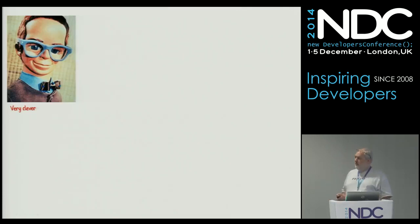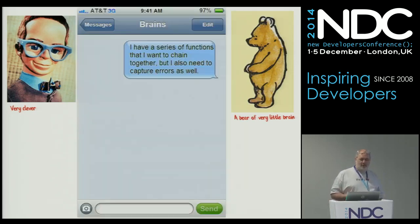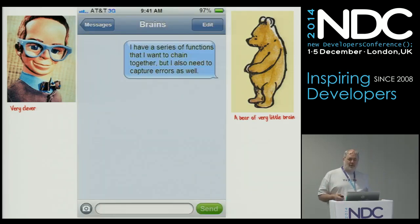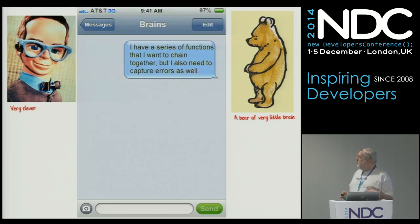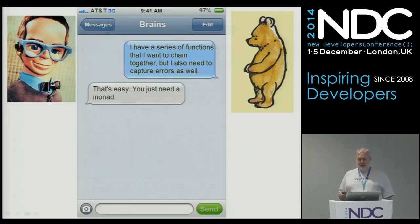So it turns out that I have a very clever friend. Because I'm a bit stupid, I asked my clever friend: I have a series of functions that I want to chain together and I need to capture errors as well — how do I do that? So my very clever friend said, well that's easy, you need a monad, because, you know, he's like a bit of an academic.